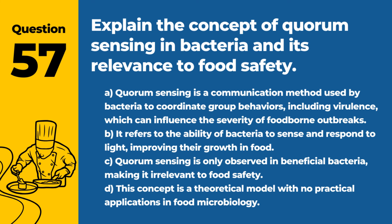Question 57. Explain the concept of quorum sensing in bacteria and its relevance to food safety. a. Quorum sensing is a communication method used by bacteria to coordinate group behaviors, including virulence, which can influence the severity of foodborne outbreaks. b. It refers to the ability of bacteria to sense and respond to light, improving their growth in food. c. Quorum sensing is only observed in beneficial bacteria, making it irrelevant to food safety. d. This concept is a theoretical model with no practical applications in food microbiology. Answer: a. Quorum sensing is a communication method used by bacteria to coordinate group behaviors, including virulence, which can influence the severity of foodborne outbreaks. Understanding quorum sensing can aid in developing strategies to mitigate bacterial pathogenicity in foods.